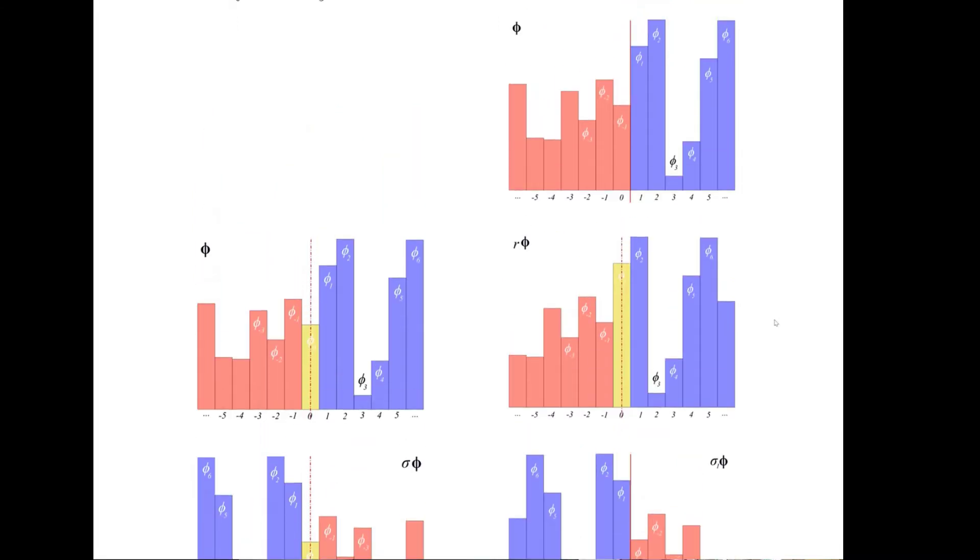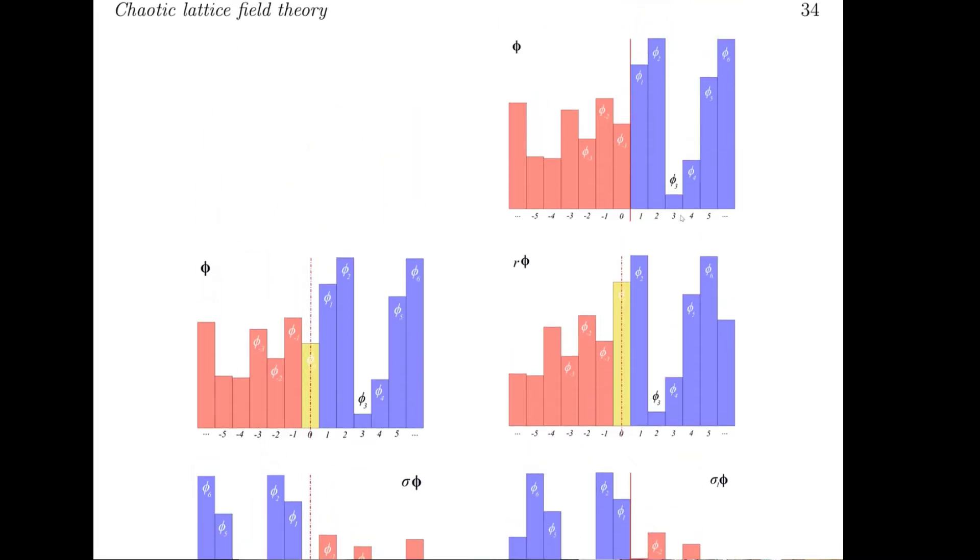But then it turns out there's a second reflection. If you take the field and you step it, one step. So what used to be the first blue column is now the gold column in the middle.